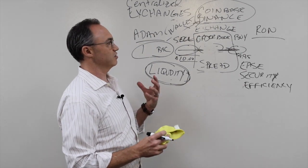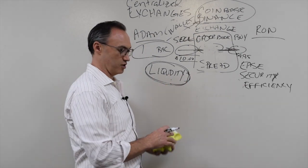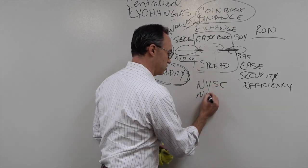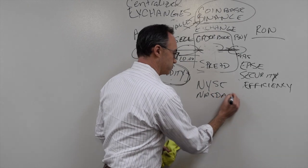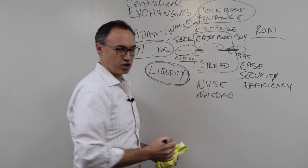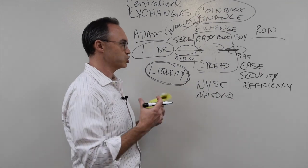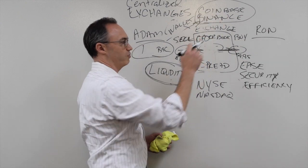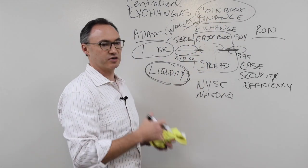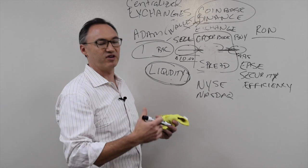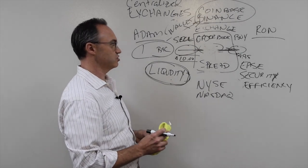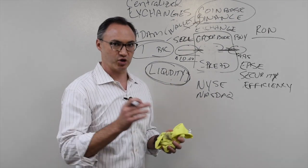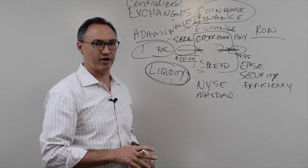So those are centralized exchanges. In the traditional world it might be the New York Stock Exchange or NASDAQ; you have commodities exchanges and all sorts of other centralized exchanges controlling the order book and the market makers. In the crypto world we have Coinbase, Binance, Bittrex, Bitfinex, and several other centralized exchanges. In the next video we'll talk about decentralized exchanges. Subscribe to the YouTube channel and check us out at interaxis.io. Thank you.